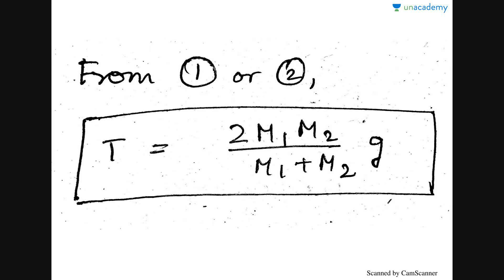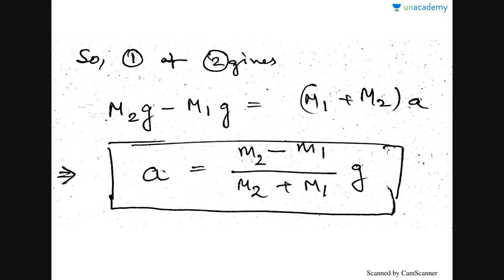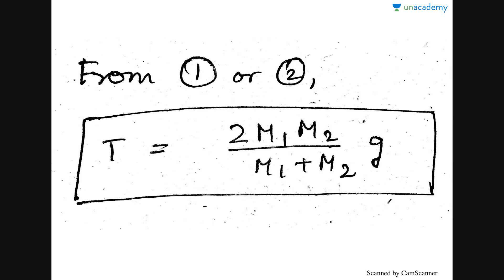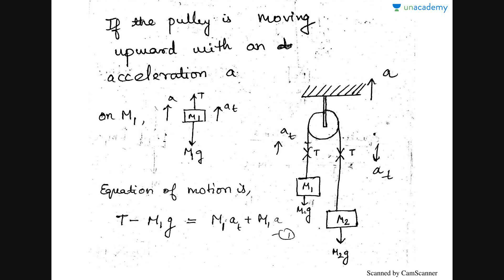Similarly, if you substitute the value of a into either of the two equations, you get the tension T. The tension is a force given by that formula. Now suppose you consider the same Atwood machine system, but the system is not at rest — it is moving with an upward acceleration given by a, meaning the whole pulley is moving upward with acceleration a.